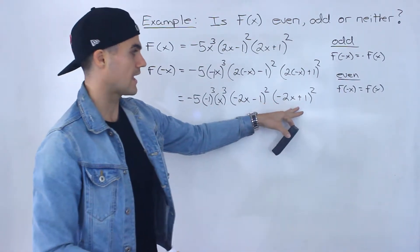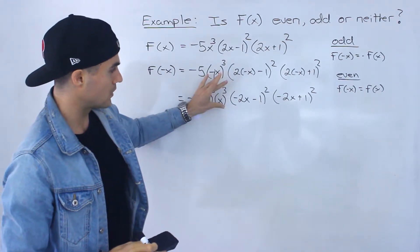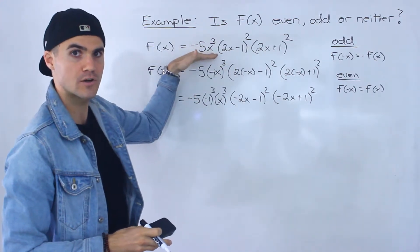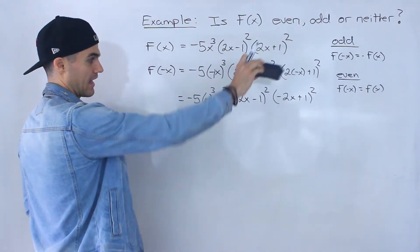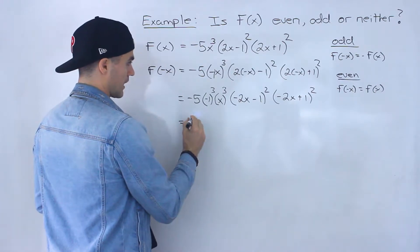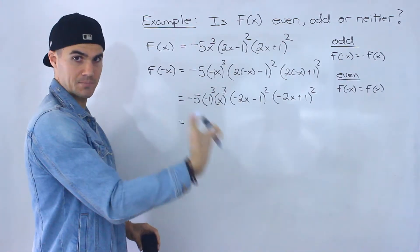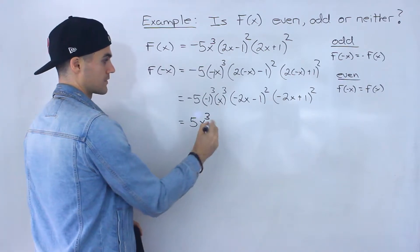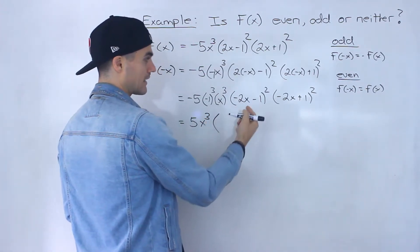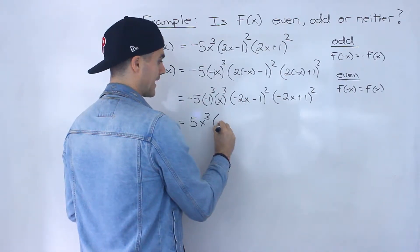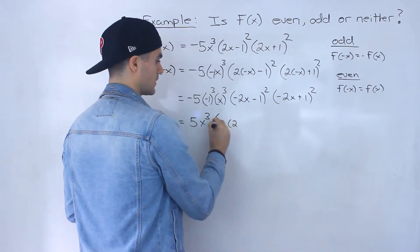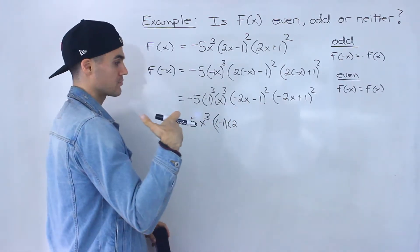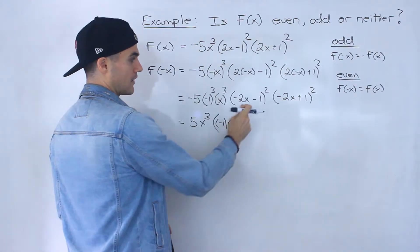What we want to do with these factors — like in the previous examples — is make sure the factors have positive leading coefficients, so they're in the same format as the original function. That way we can compare them and see if any of those equalities hold. So first off, negative 1 to the power of 3 is negative 1, and negative 1 times negative 5 gives us positive 5, and then we have x cubed. For the squared factors, I'm going to factor out a negative 1, but because of the exponent, I can't take it out yet — I have to keep it within the bracket.